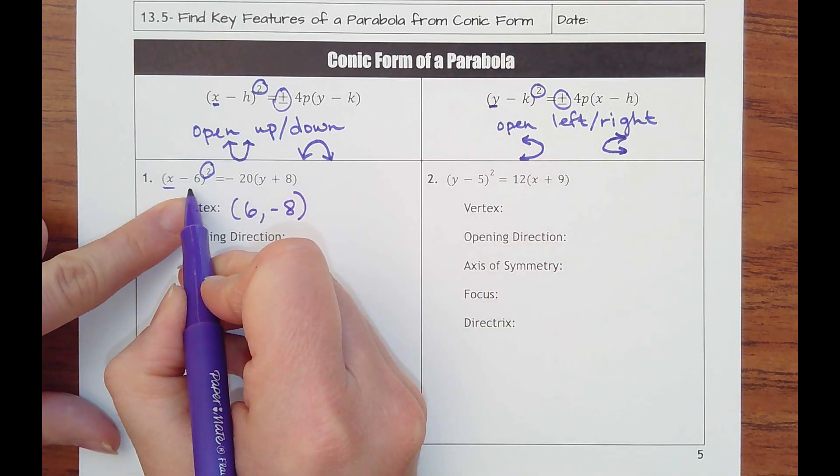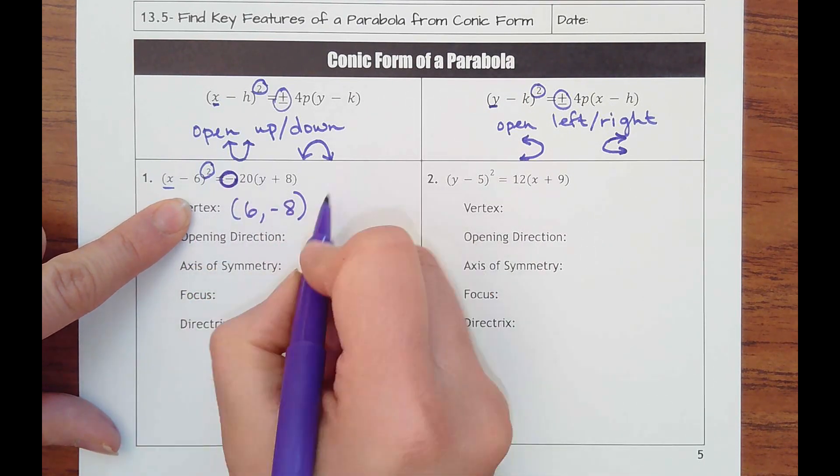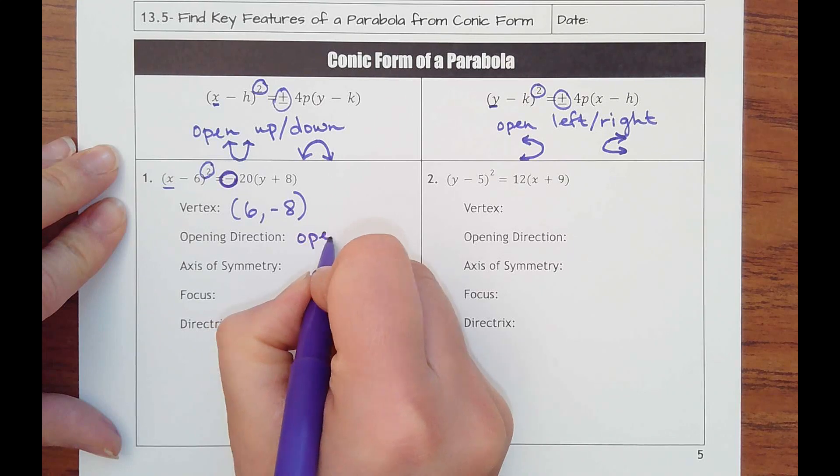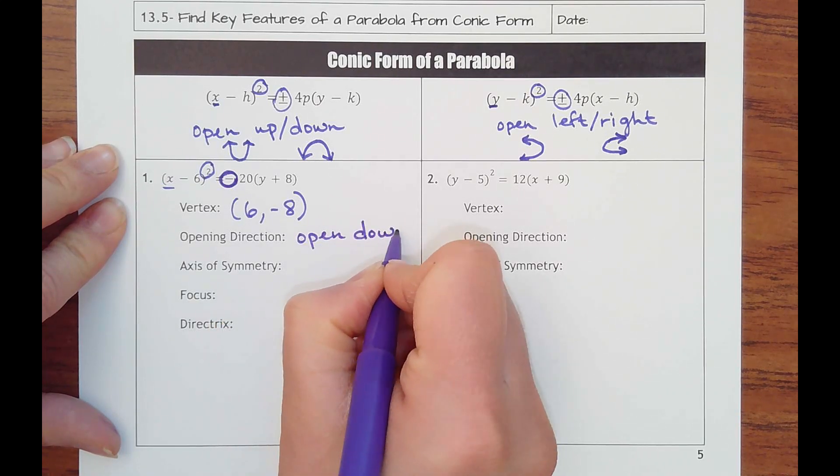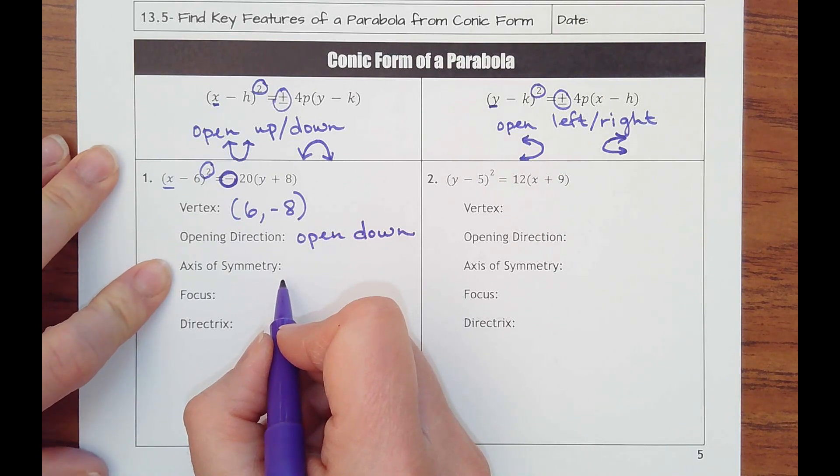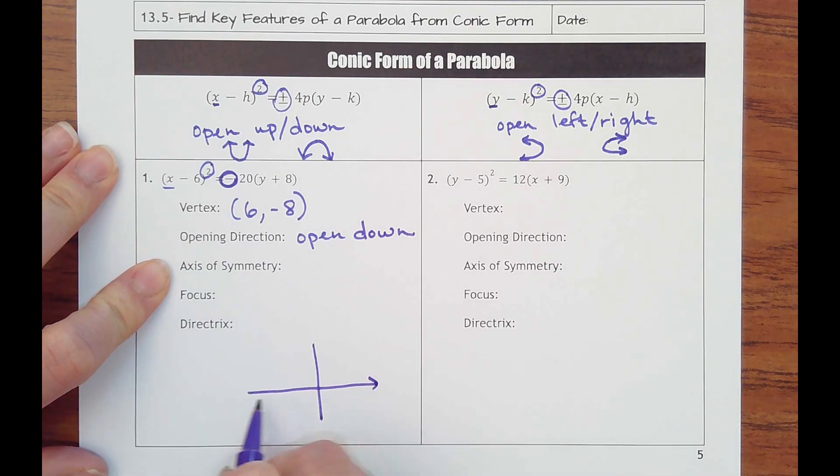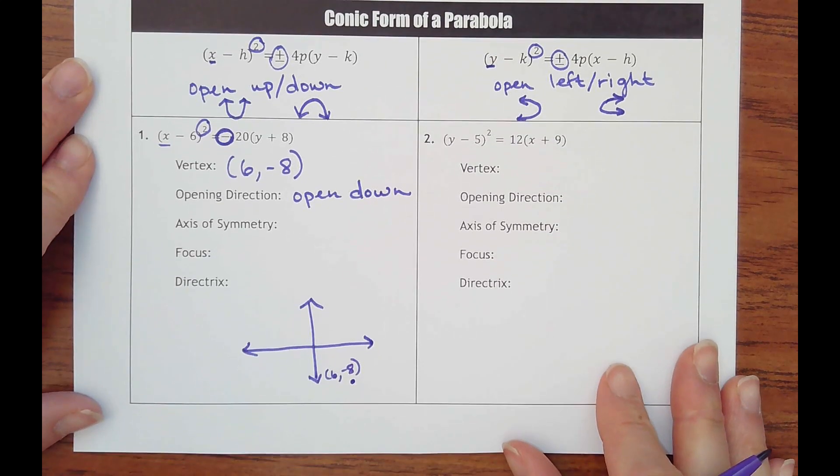The opening direction, so up or down. But this is a negative value, so it's going to open down. Axis of symmetry. Let's sketch this real quick. So if I'm going to draw a coordinate plane, and I'm at 6, negative 8, let's put that here. And I'm opening down.